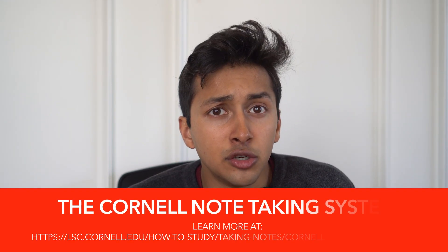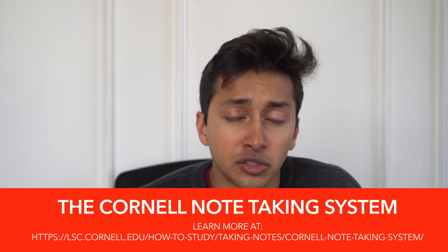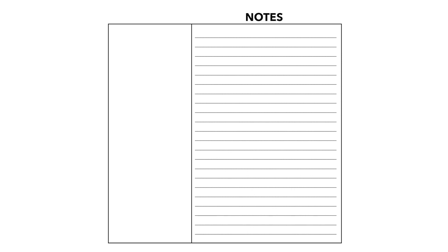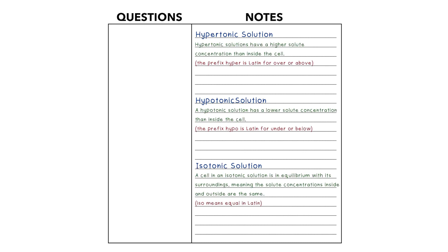If you find that you learn better when you write down your notes, you may look into using Cornell notes over traditional notes. In this style of notes, you fold your paper into a left and a right section. On the right side, you write down your notes from whatever content you're reviewing, and on the left side, you write down questions about the notes you've written on the right side. For demonstration purposes, let's say we're discussing hypertonic, hypotonic, and isotonic solutions. On the right side, you would write the definitions of each of them with a diagram if you're a visual learner.